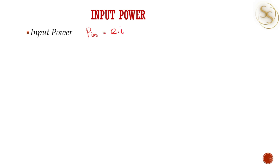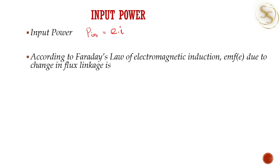Input power P_in is nothing but E times I, where E is the EMF and I is the current. According to Faraday's Law of Electromagnetic Induction, EMF due to change in flux linkage can be represented as E equals minus dλ/dt.